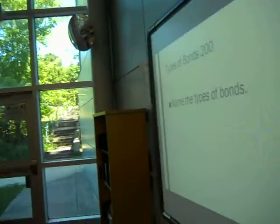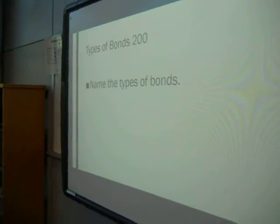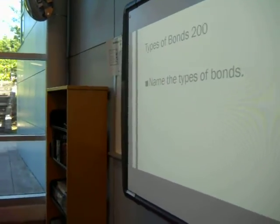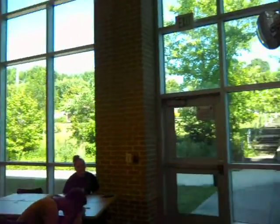Types of Bonds, 200. Name the types of bonds. Ionic bonds. No. Alright, come back.